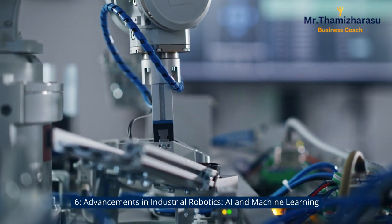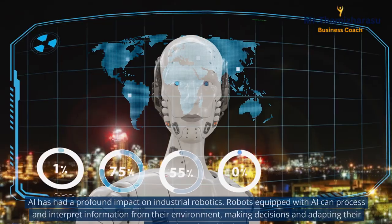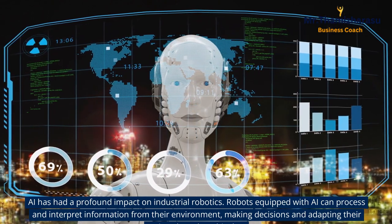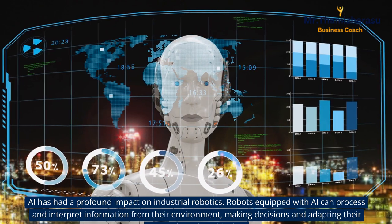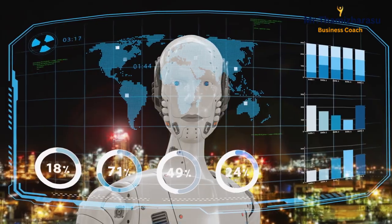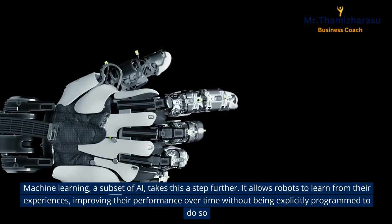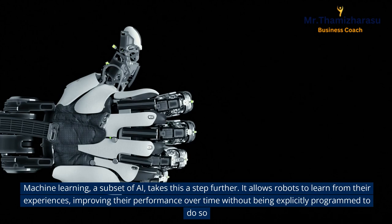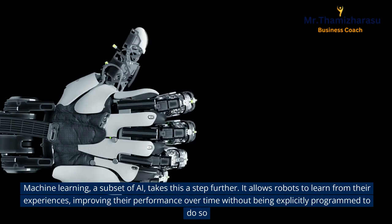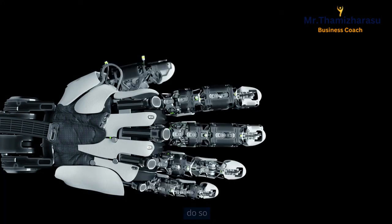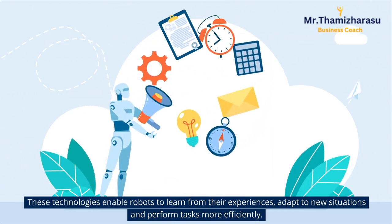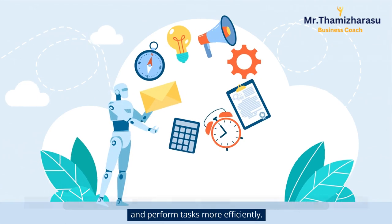Advancements in industrial robotics: AI and machine learning. AI has had a profound impact on industrial robotics. Robots equipped with AI can process and interpret information from their environment, making decisions and adapting their actions based on this data. Machine learning, a subset of AI, takes this a step further — it allows robots to learn from their experiences, improving their performance over time without being explicitly programmed to do so, and enabling them to adapt to new situations and perform tasks more efficiently.